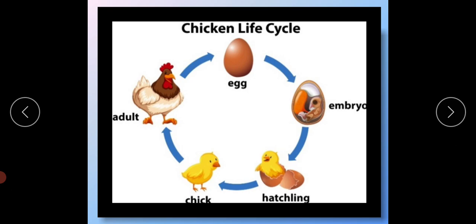I have also discussed the life cycle of a chicken or hen. The hen gives eggs. The egg develops into an embryo. The embryo will later develop into a chick, and this chick will develop into an adult hen.